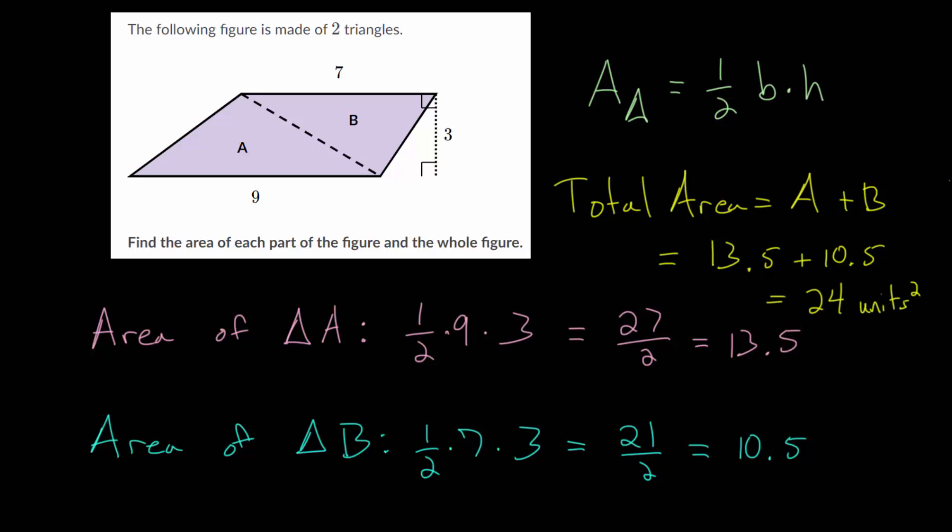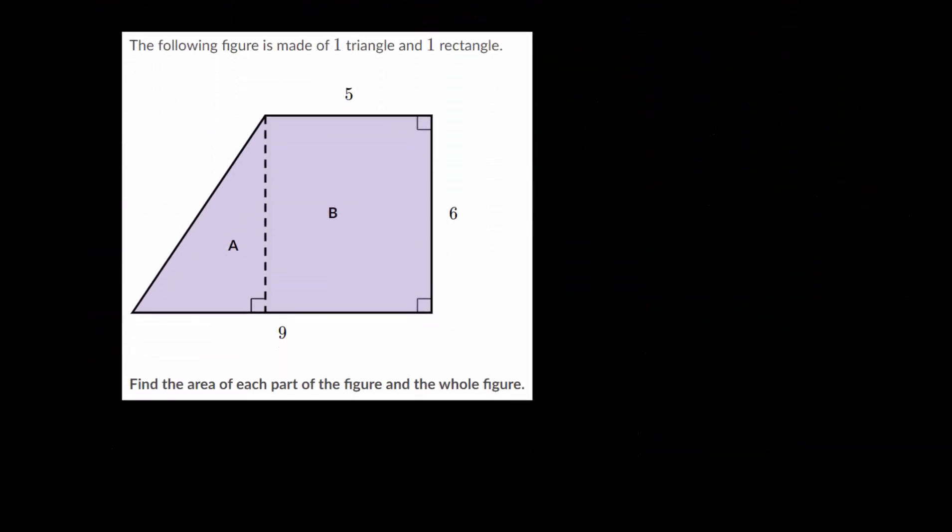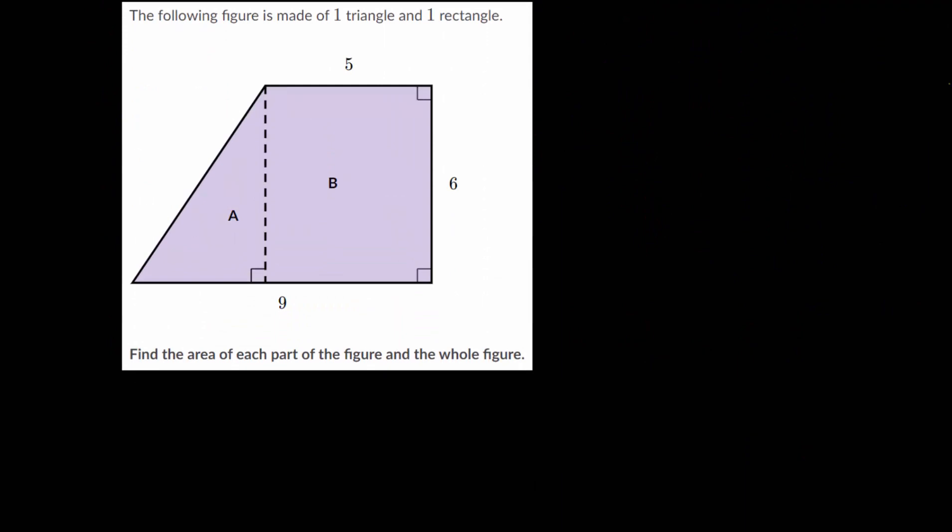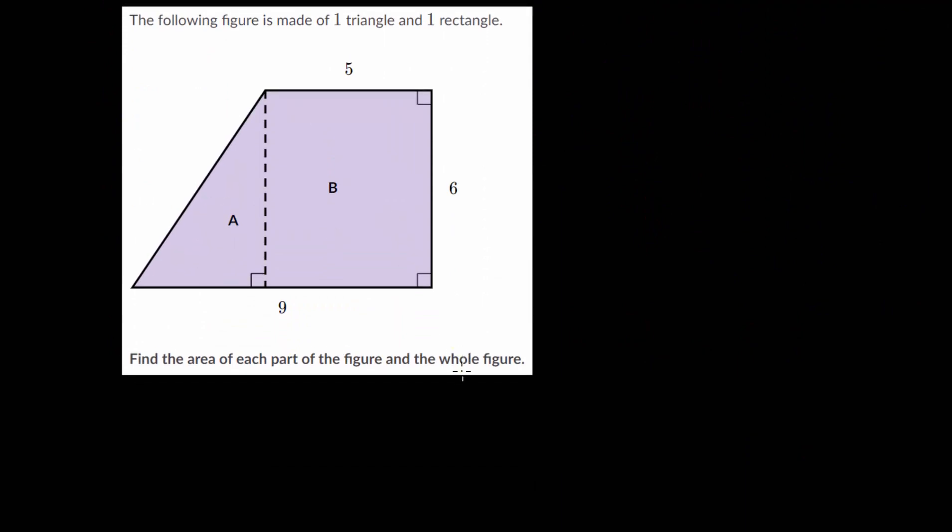Let's look at one more problem like this, where we need to find the area of each part, and then add those together to find the area of the entire figure. This one is broken up into a triangle and a rectangle. Just like the last one, the total area is just going to be the sum of the two areas of the smaller shapes. So it'd be the area of A plus the area of B.